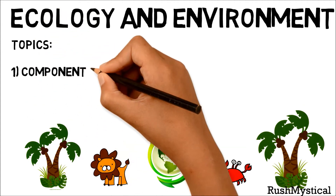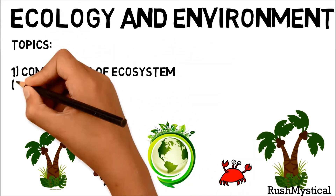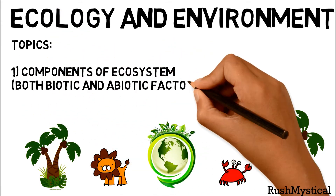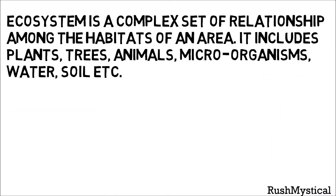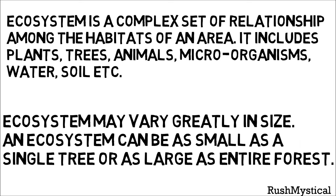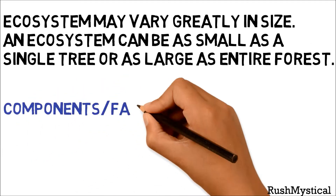Today we will study the components of ecosystem — both biotic and abiotic factors in detail — as well as ecotone and niche and their types. An ecosystem is a complex set of relationships among the habitats of an area. It includes plants, trees, animals, microorganisms, water, soil, etc. Ecosystems may vary greatly in size, from as small as a single tree to as large as an entire forest.